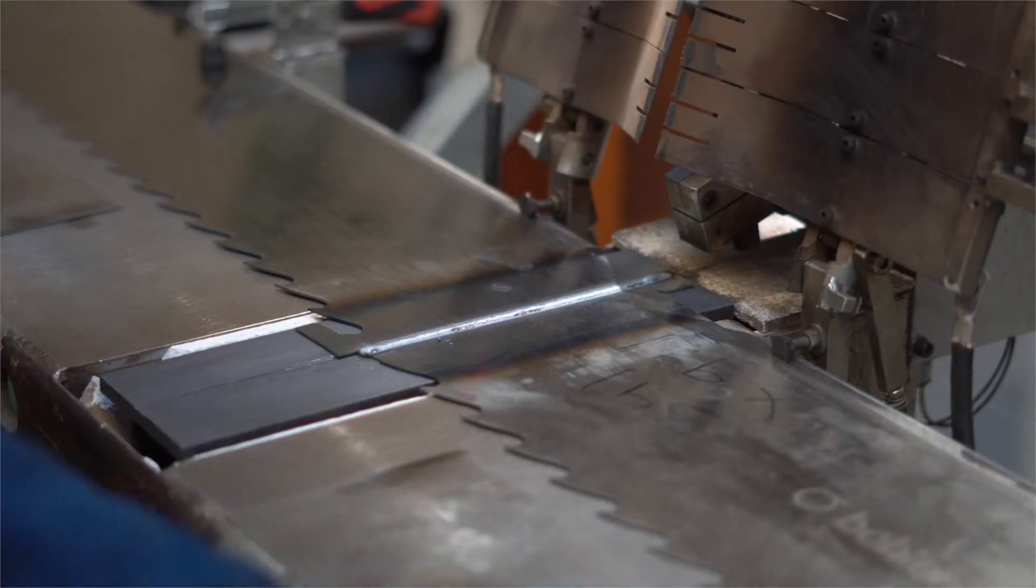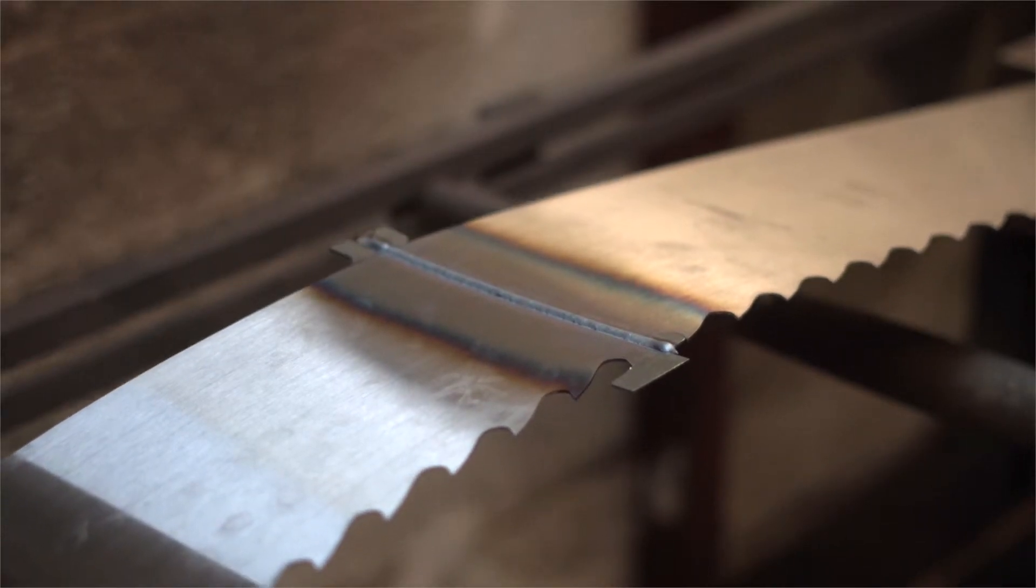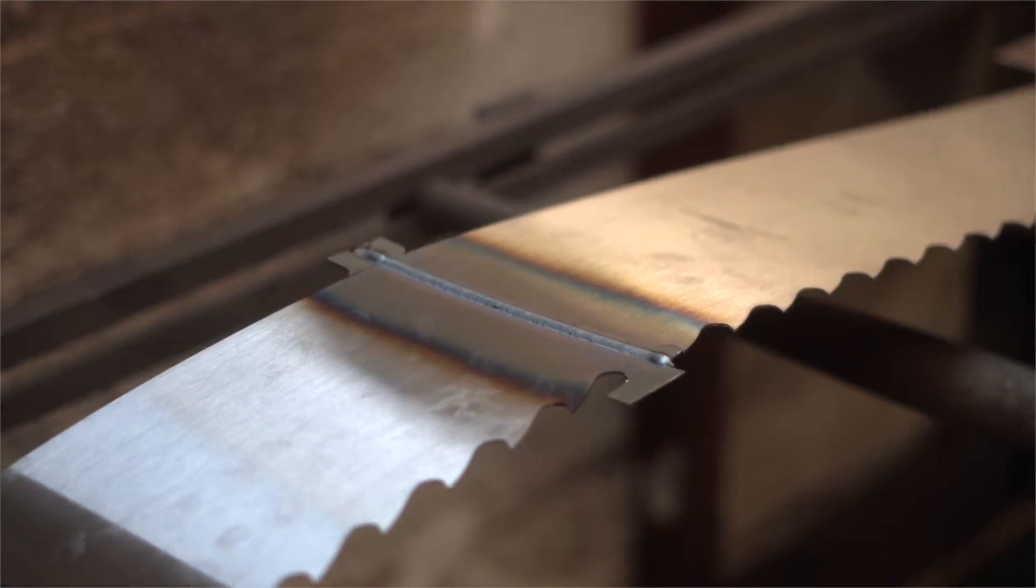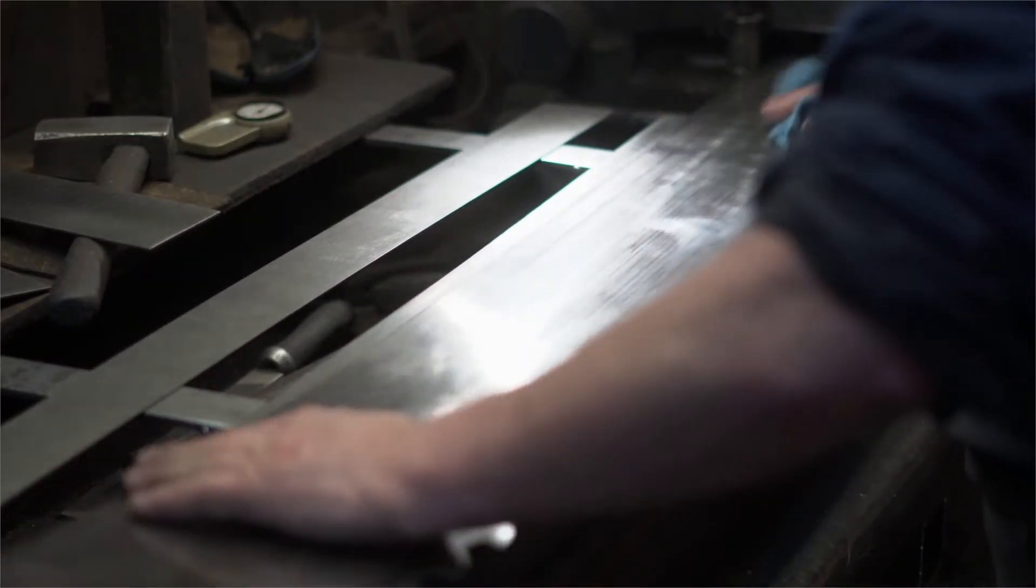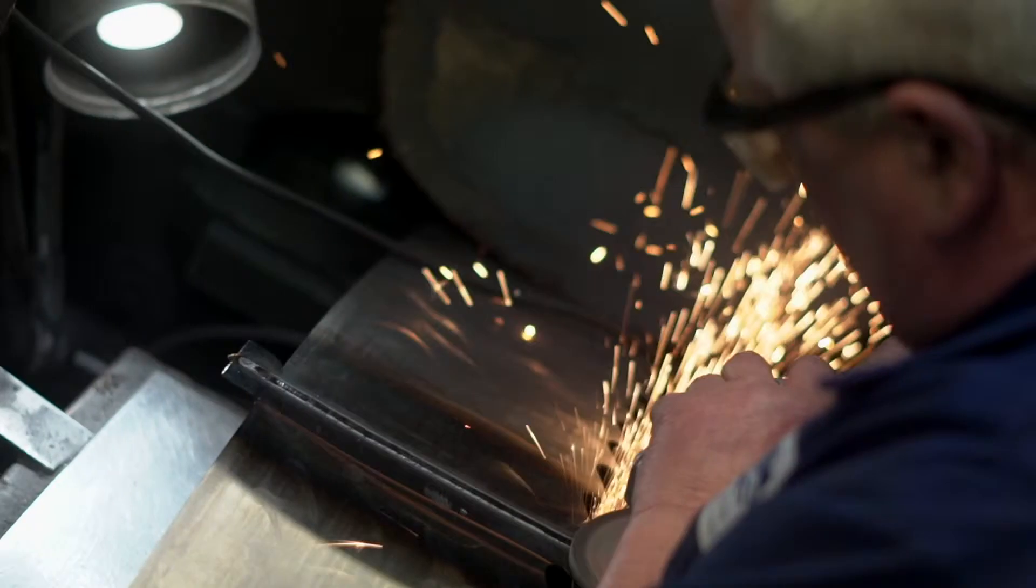After the saw is joined, the weld needs to be ground and polished. The point of the weld needs to be ground so that it is absolutely level on both sides to the original strip coil.